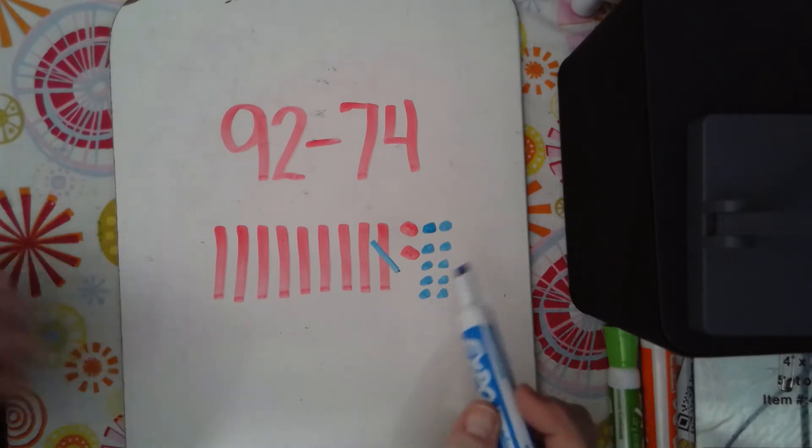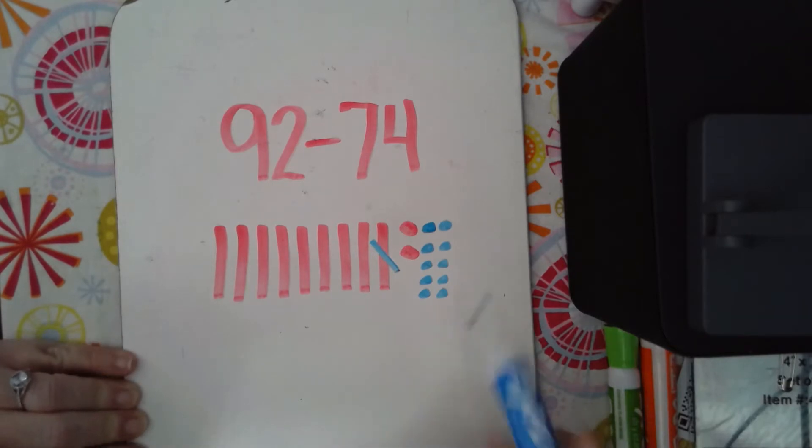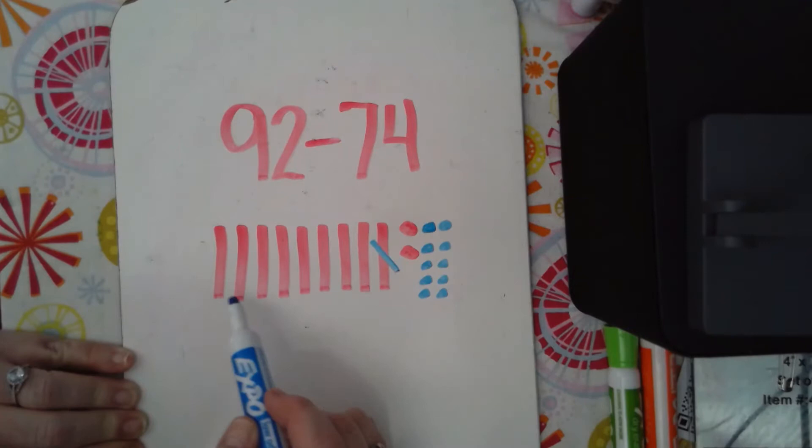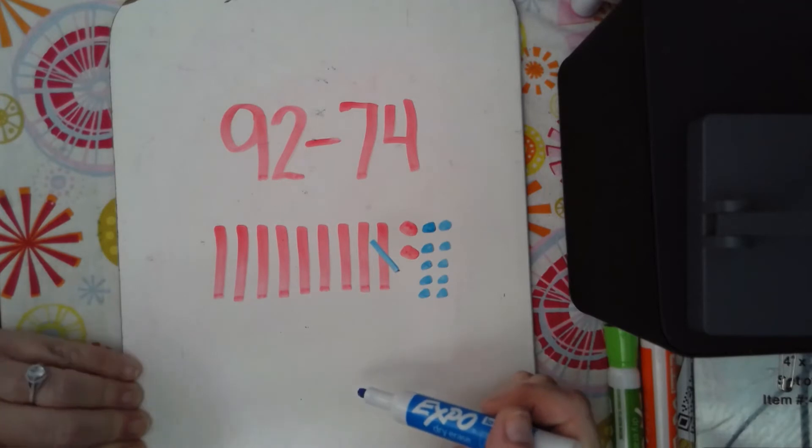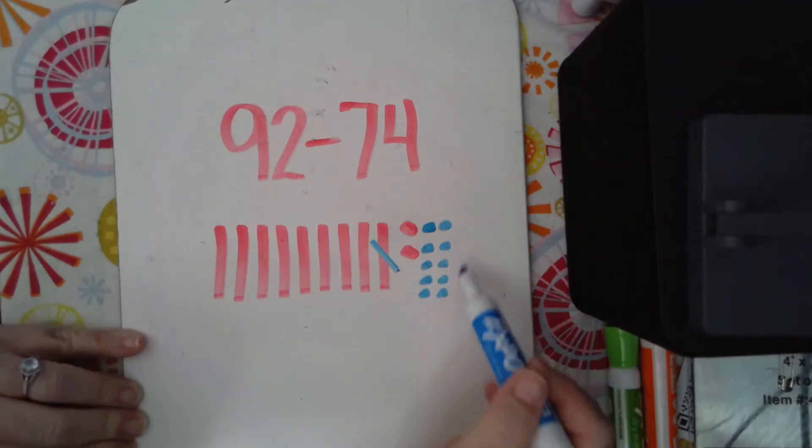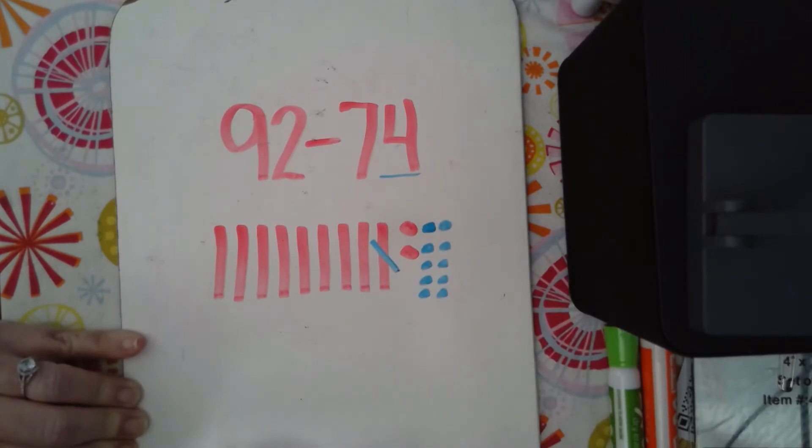Alright, so now I have 10, 11, 12 ones. Now let's look at do I still have 92. I do because I have 10, 20, 30, 40, 50, 60, 70, 80. And then this 10 would make 90, 91, 92. But now because I have regrouped my 10 here, now I can take away those 4 ones that I needed to.